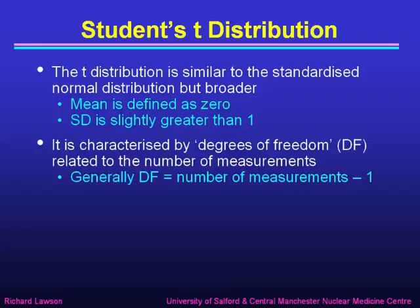The t-distribution is characterized by something called degrees of freedom, which we usually write as df. It's related to the number of measurements, and generally the number of degrees of freedom is the number of measurements minus one. We'll talk more about degrees of freedom in a later lecture.